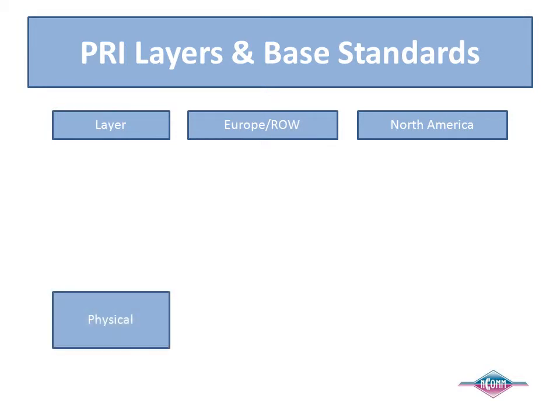Layer 1, or the physical layer, establishes transmission for T1 or E1, which defines what each bit and byte means, provides the operations, administration, and maintenance functions to ensure physical layer reliability, and provides Layer 1 alarm information required by Layer 2 ISDN protocols. The primary standards for European Layer 1 cover E1 lines, and they include G.703, G.704, and G.826.